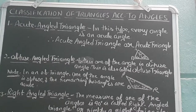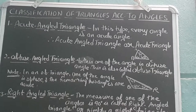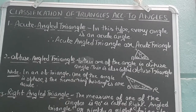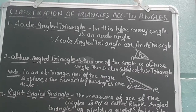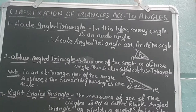Note: in an obtuse angle triangle, one of the angles is obtuse and the remaining two angles are acute, meaning less than 90 degrees. So in an obtuse angle triangle, only one angle is more than 90 degrees, while the other two are acute.